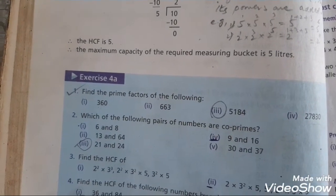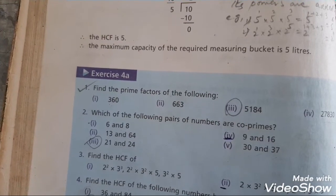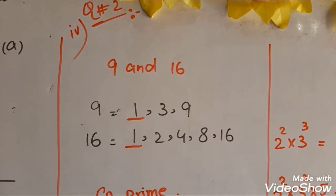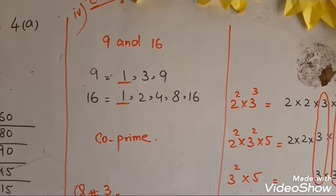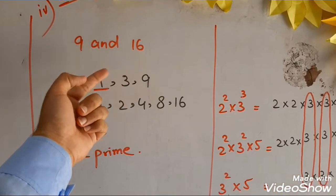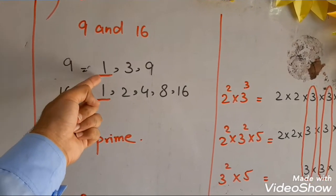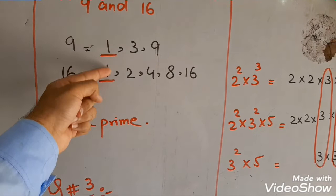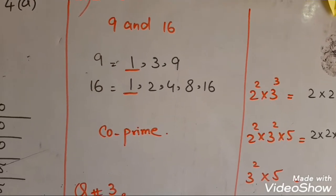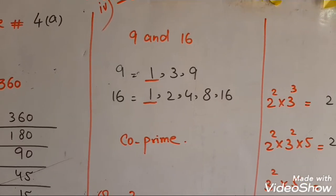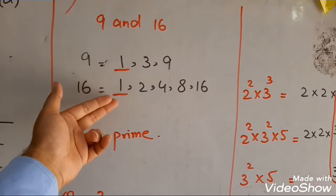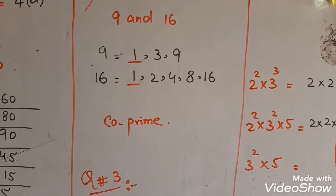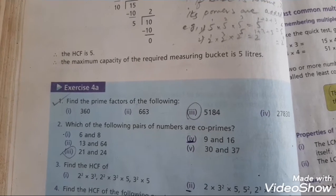Question number 2: which of the following pairs of numbers are co-primes? आपने बताना है कि कौन से numbers co-primes हैं। Question number 2 का fourth part है 9 and 16। 9 के factors हैं: 1, 3 and 9। 16 के factors हैं: 1, 2, 4, 8 and 16। Which is common? 1 is common — ऐसे numbers जिनका HCF सिर्फ 1 निकले उन्हें हम लोग co-prime numbers बोलते हैं।